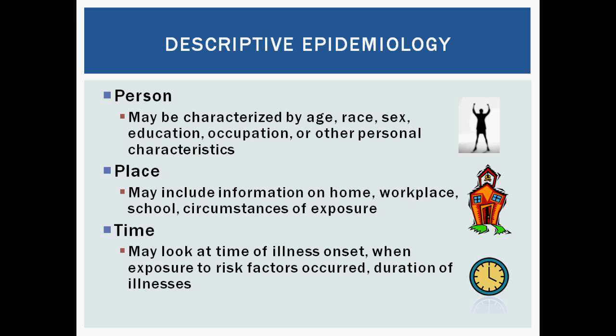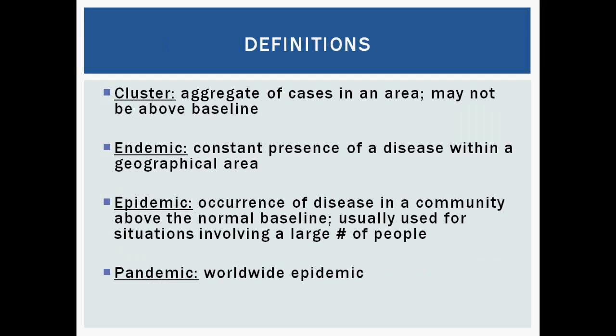For a reminder on our definitions: a cluster is when we have a number of cases above our baseline, but it's not really widespread — just a couple of cases. Endemic means the presence of a disease in a geographical area that's always there, constantly at some level. Epidemic is when we have above-baseline numbers of disease, usually involving a larger number of people — the Ebola epidemic going on in West Africa is a prime example. And then pandemic means a worldwide epidemic, such as H1N1 back in 2009, when that new flu strain circulated across the whole globe.